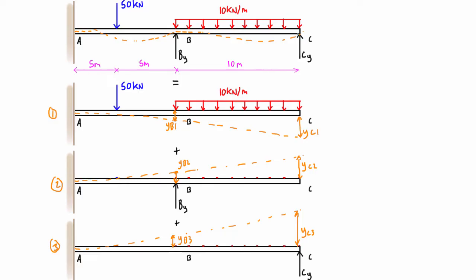Because we know the actual deflection at B and C is zero, the downward deflection YB1 must equal the sum of the upward deflections: YB1 = YB2 + YB3. Similarly, YC1 = YC2 + YC3. This gives us a system of two equations and two unknowns — the magnitudes BY and CY. YB1 and YC1 are known values we can calculate from the statically determinate cantilever, while BY and CY appear in the other terms.